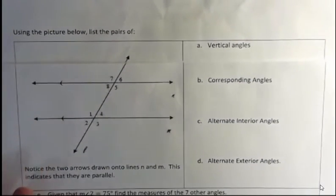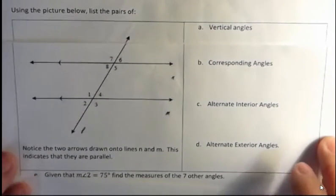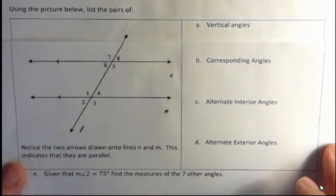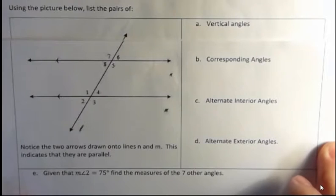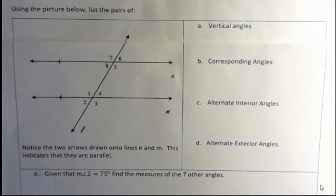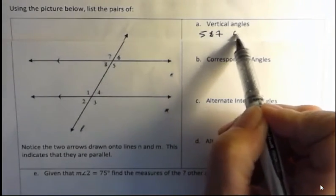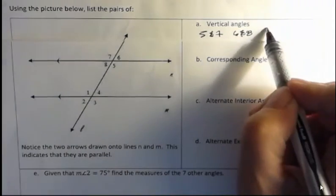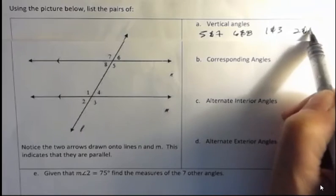You might end up doing some of this in your work. Using the picture below, list the pairs of vertical angles. Well, the vertical angles are five and seven, six and eight, one and three, and two and four.